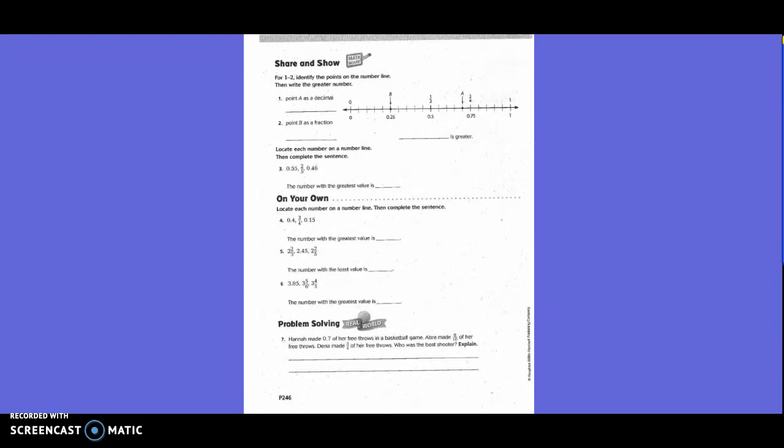Share and show. From 1 through 2, identify the points on the number line. Then write the greater number. Point A as a decimal is what? 0.7 or 7 tenths. Because these go by 5 hundredths. So 5 hundredths less than 75 hundredths. So this is 70 hundredths or 7 tenths in simplest form.